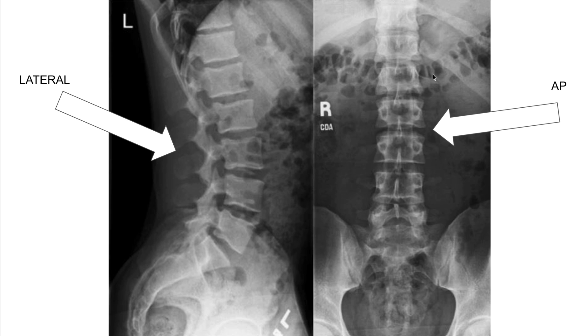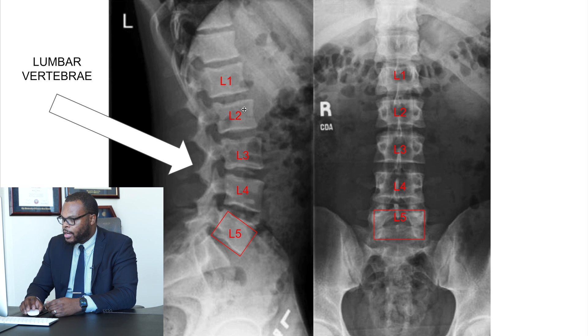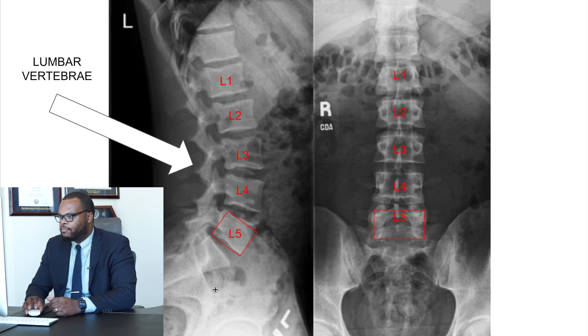The first thing I do is count the number of lumbar vertebrae. Some patients have abnormal anatomy, meaning more than the normal five lumbar vertebrae. I usually count them on the AP view first. Each of the vertebrae should be a square shape and pretty consistent throughout the lumbar spine. So this is the fifth, fourth, third, second, and first lumbar vertebrae. You can tell this is T12 because you can see the first rib here. And then on the lateral view, this is the fifth, fourth, third, second, and first lumbar vertebrae, and then we're getting into the sacral region.